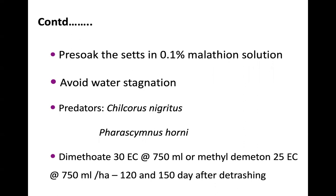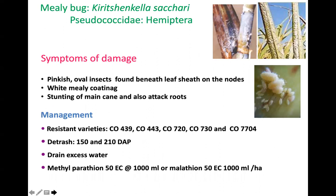Another important sucking insect is the sugarcane mealybug, belonging to family Pseudococcidae, order Hemiptera. The insect is a pinkish oval insect found beneath the leaf sheath of the nodes. It congregates there to suck juice. A white mealy coating is easily spotted. It causes stunting of the main cane and also attacks roots. Management includes using resistant varieties, rationing, draining excess water, and applying Methyl Parathion or Malathion.